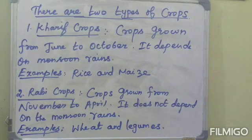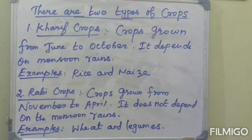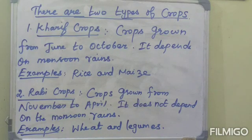In hilly regions, people grow crops by cutting steps into the mountainside. This is known as step farming or terrace farming.